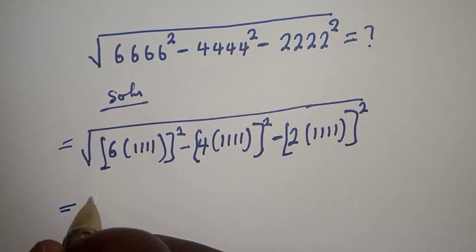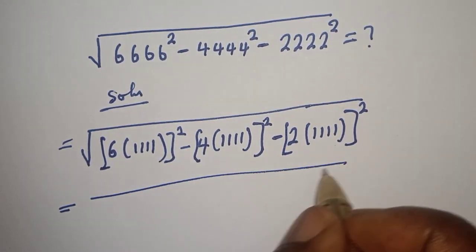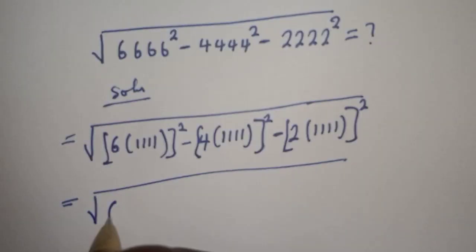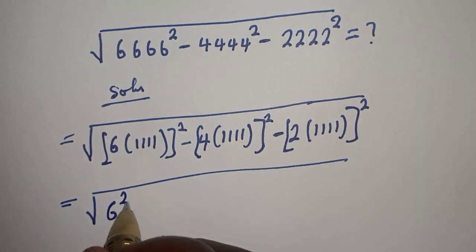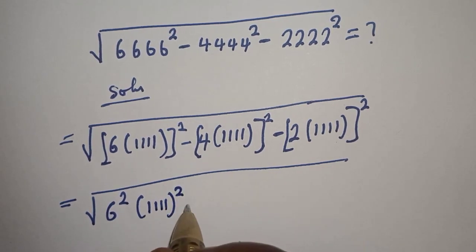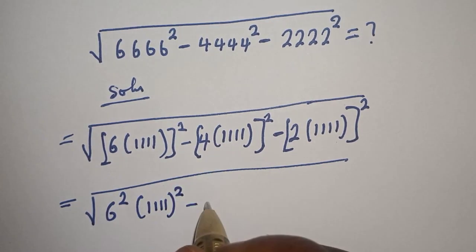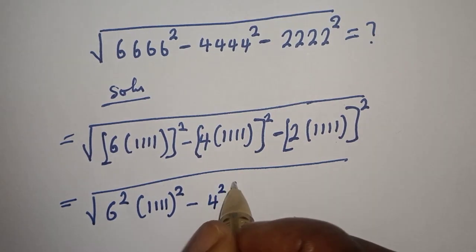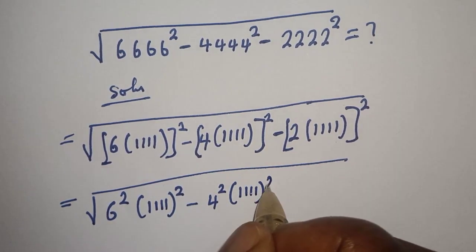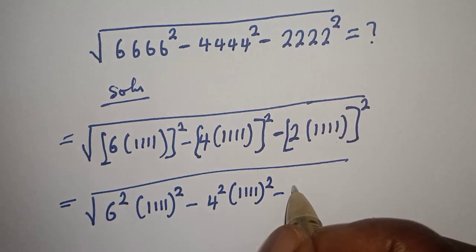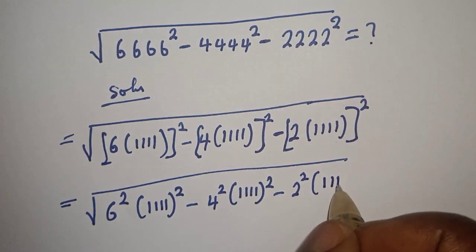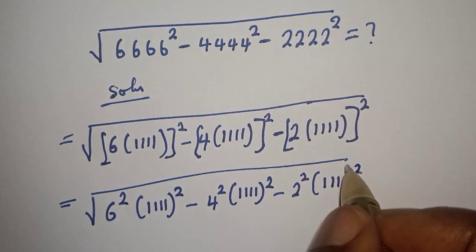This is equal to the square root of: 6 squared bracket 1111 squared, minus 4 squared bracket 1111 squared, minus 2 squared bracket 1111 squared.